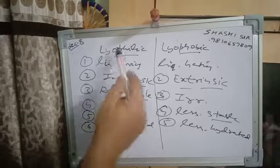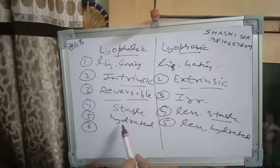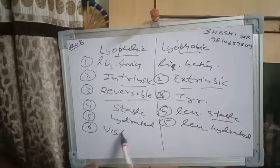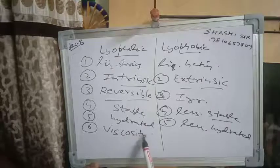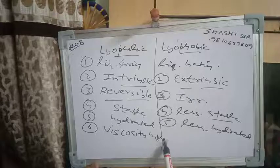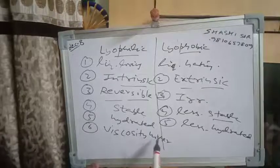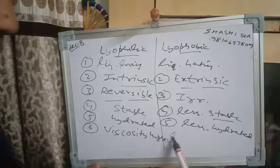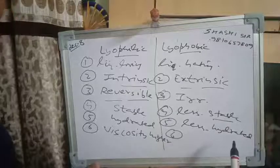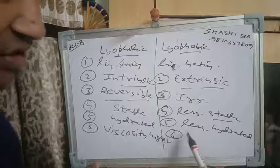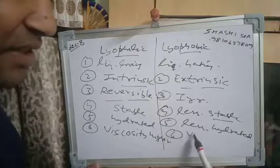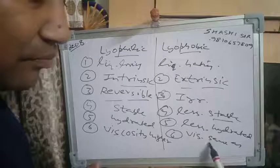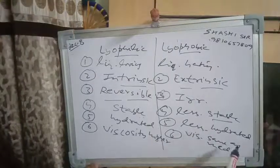Sixth point — viscosity. Lyophilic colloids are properly mixed with the medium, so their viscosity is higher than that of the medium. Because they are liquid loving, the attraction is more, which restricts movement and increases viscosity. For lyophobic colloids, viscosity is approximately the same as that of the medium because they are not mixing properly — they have no attraction for the dispersion medium.